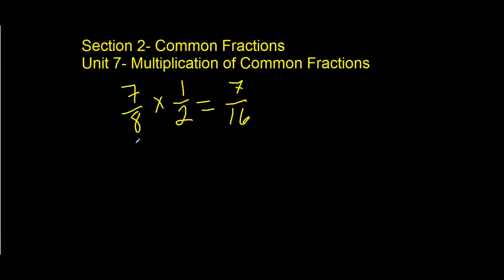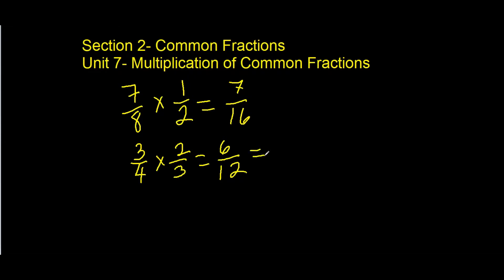Or, we'll try another one. 3 fourths times 2 thirds. 2 times 3 is 6. 3 times 4 is 12. 6 twelfths, or, if you'll notice, 6 is 1 half of 12, so we can reduce that to 1 half.